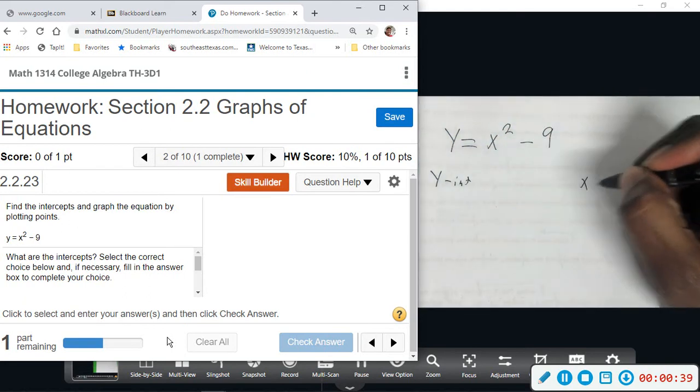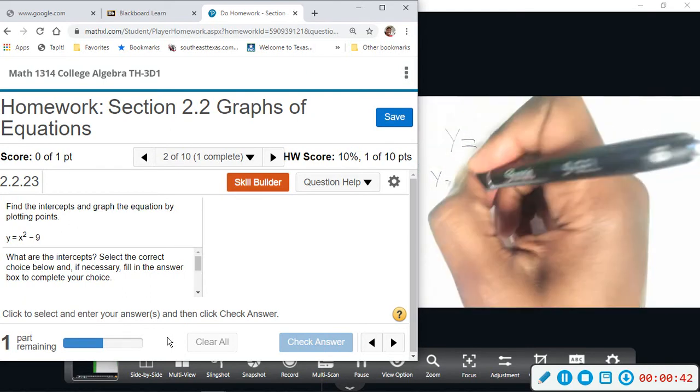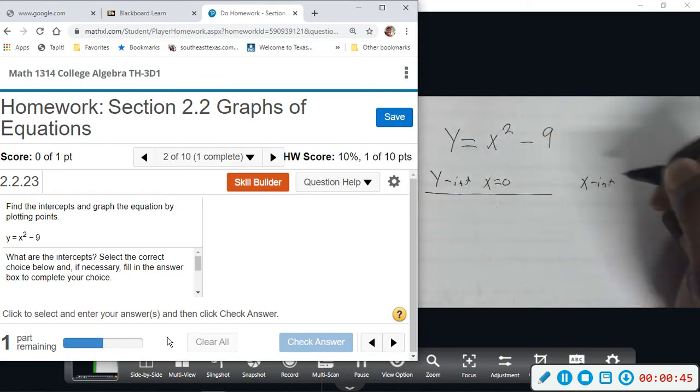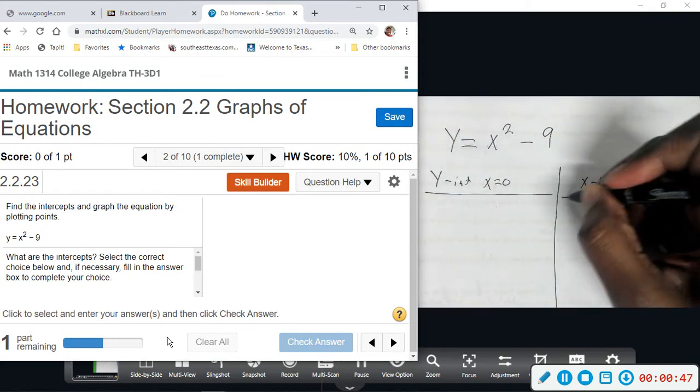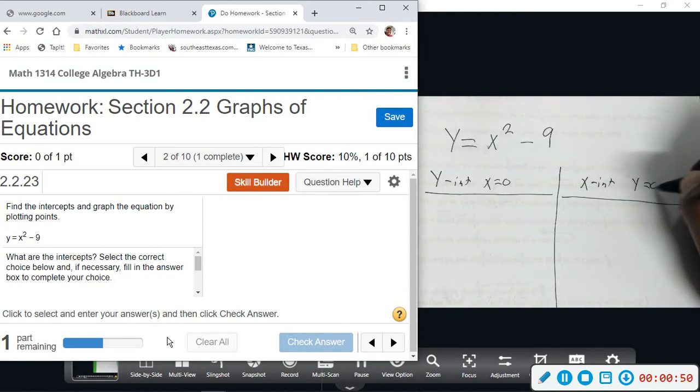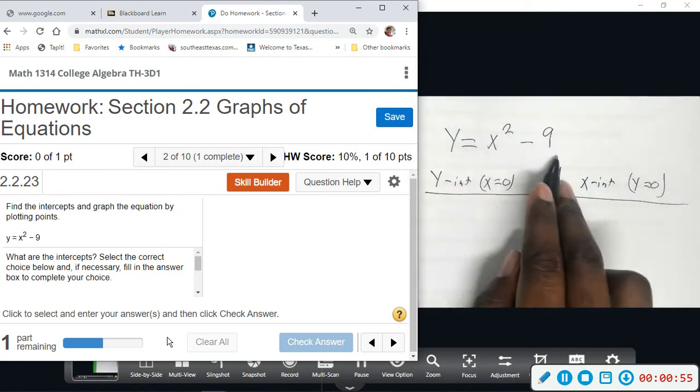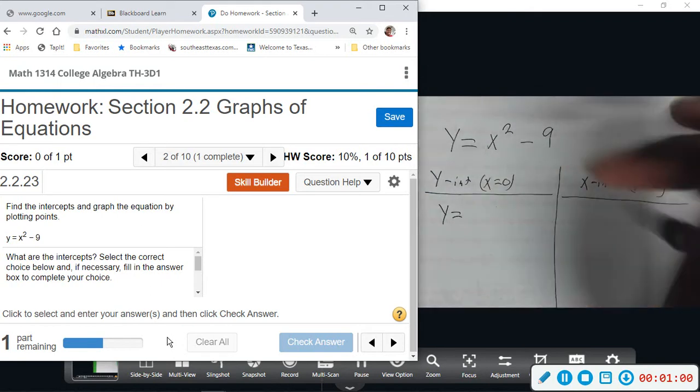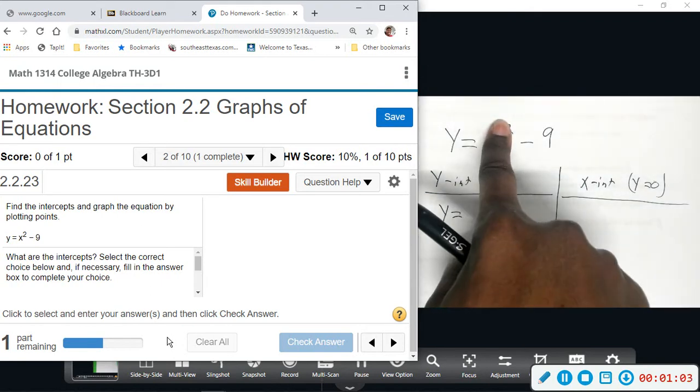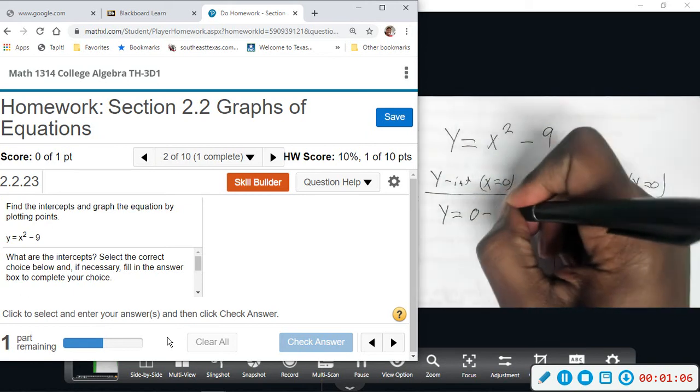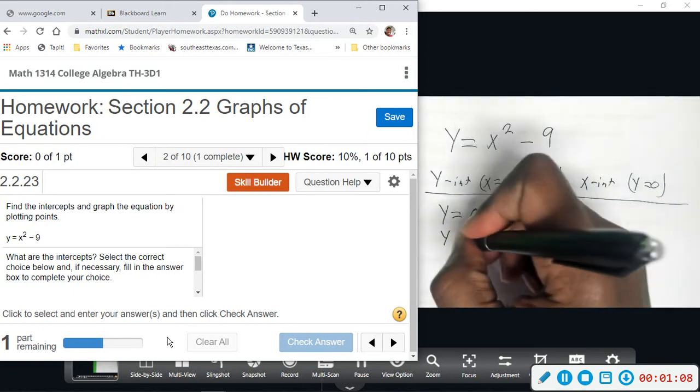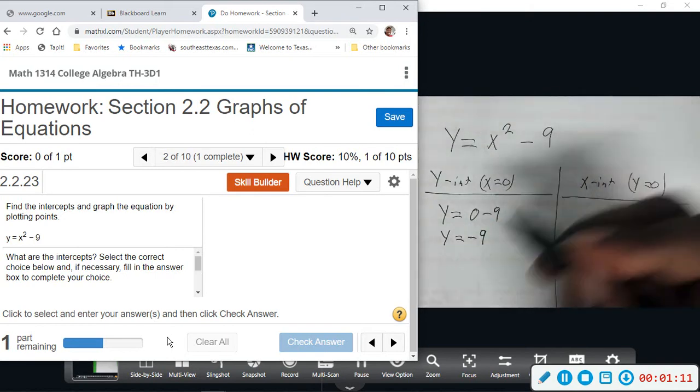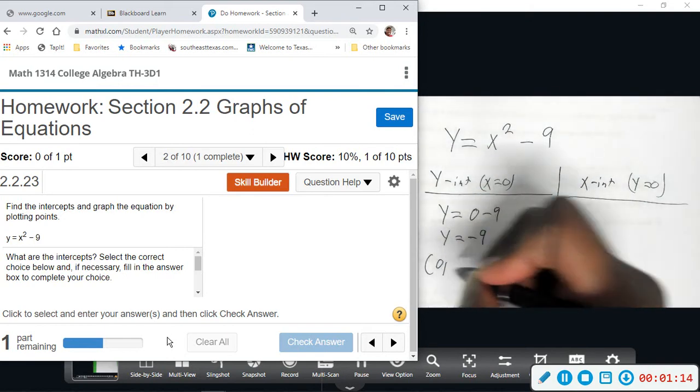Then we're going to do x-intercept. Remember, y-intercept: x equals zero. I'm going to do the x-intercept: y equals zero. So I'm going to take this original equation, plug a zero for x, so we get y equals... usually what I do is I just cover up that x, it's going to be zero, and you get zero minus nine. So you just see y equals negative nine. So ordered pair: zero, negative nine.